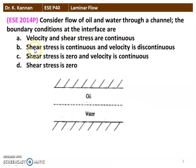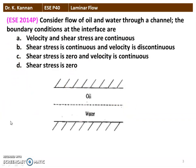The next question from the 2014 question paper: consider flow of oil and water through a channel. The boundary condition at the interface. There are four options: velocity and shear stress are continuous; shear stress is continuous and velocity is discontinuous; shear stress is zero and velocity is continuous; shear stress is zero. The correct option is shear stress is continuous and velocity is discontinuous — that is the condition at the interface of the two fluids.